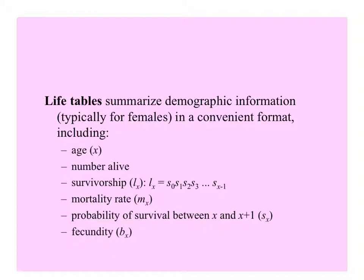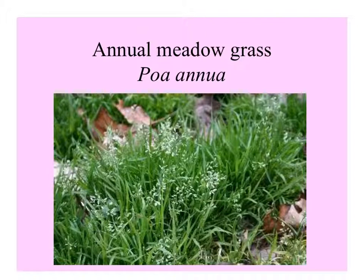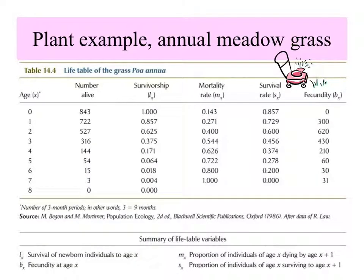Different formats sometimes use different letters for different things, but these are the entities of importance. A beautiful example of a life table following a short-lived organism is that made for annual meadow grass, Poa annua, by Richard Law. Richard Law sowed a bunch of seeds in a plot of land and counted the number of individual grass plants alive initially — 843. At the different age intervals, he censused this population. Note that the age intervals are 3 months long, so age interval 3 means 9 months.